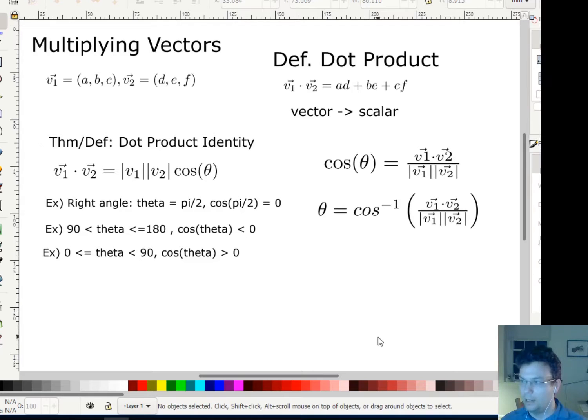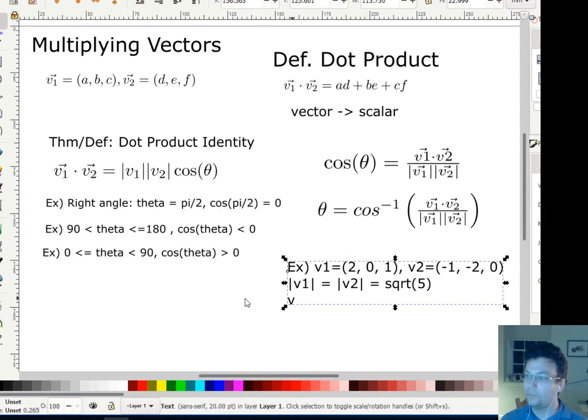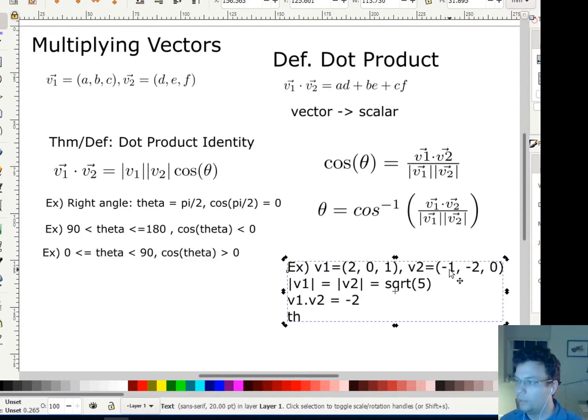Let's look at an example. Say we had the vector (2, 0, 1) in 3D, and the vector (-1, -2, 0) in 3D. That's v1 and v2. The magnitude of v1 is actually equal to the magnitude of v2, which is the square root of 5. So 2 squared plus 0 squared plus 1 squared is 5. What about the dot product? v1 dot v2 is going to be negative 2, because we have 2 times negative 1 plus 0 times negative 2 plus 1 times 0.